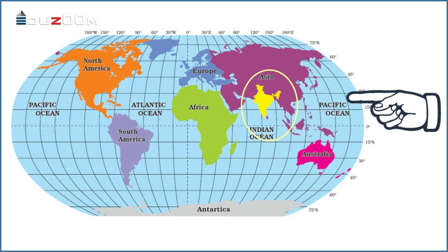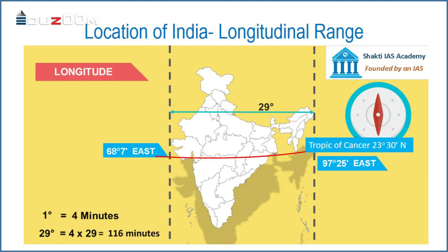So, it is clearly evident that India lies completely on the northern hemisphere. Similarly, in this diagram, you can identify that the longitudinal range of the mainland extends between 68 degrees 7 minutes east and 97 degrees 25 minutes east longitudes.